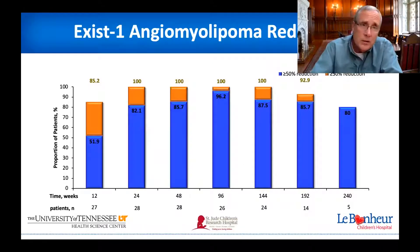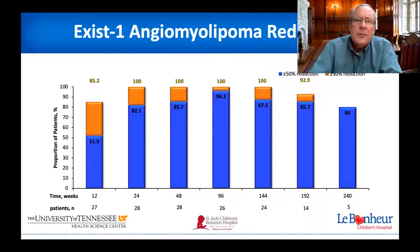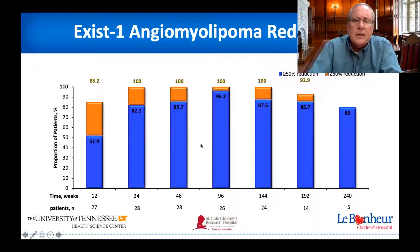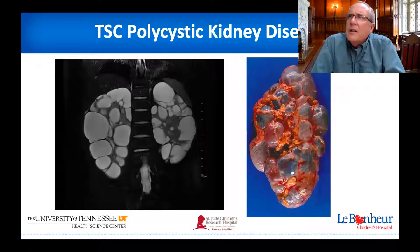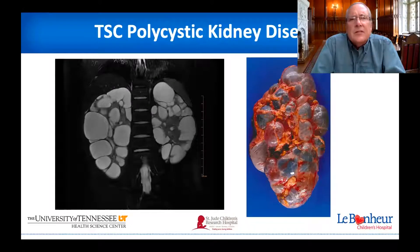In the EXIST-3 trial, everolimus showed some benefit for treatment-resistant seizures. However, there's a chunk of patients — roughly 15% — that don't have as dramatic a response to mTOR inhibitors as we would like. We're trying to get funding for clinical trials to help improve outcomes for those patients. What about the cystic disease? The cystic disease is more complicated — there are really five types. How do cysts actually form?